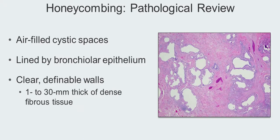Here we see microscopic honeycombing. You can see these cysts within dense fibrosis. Typically, they're lined by bronchiolar epithelium, and they can vary in their size as well as how many occur together. They can occur like pools of water, or lakes seen at a distance. But this is a good example of honeycomb cysts.